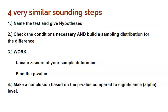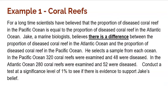Alright, here's the problem I want to do in this video. For a long time, scientists have believed that the proportion of diseased coral reef in the Pacific Ocean is equal to the proportion of diseased coral reef in the Atlantic Ocean. Jake, a marine biologist, believes that there is a difference between the proportion of diseased coral reef in the Atlantic Ocean versus the Pacific Ocean. So to try to prove this, he selects a random sample from each ocean.